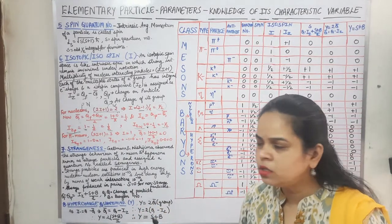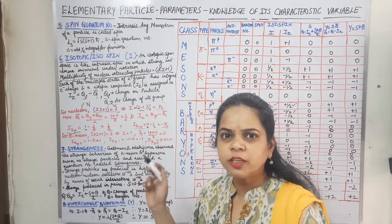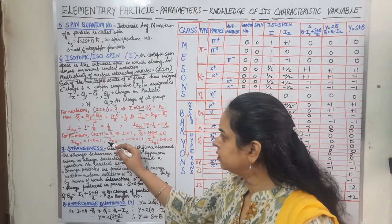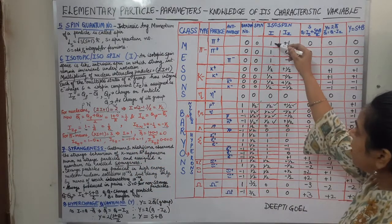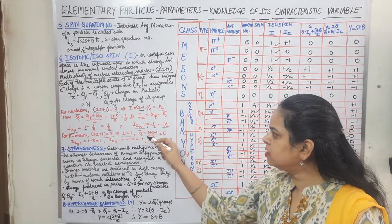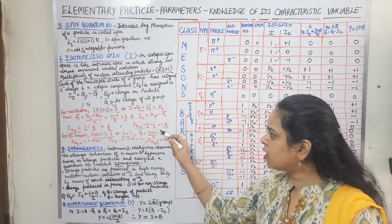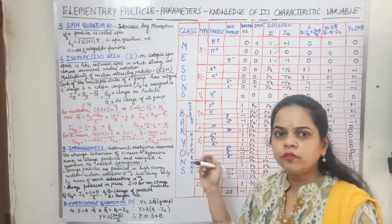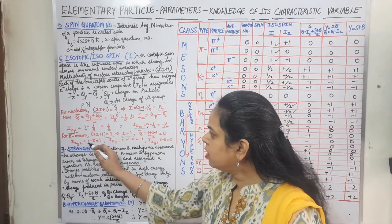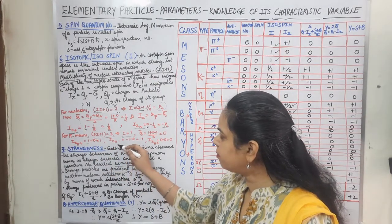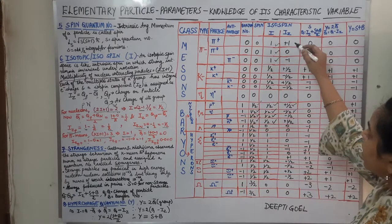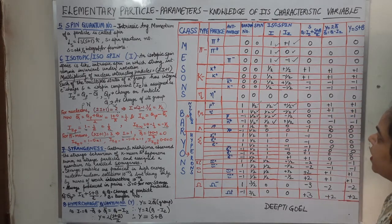Carrying the same calculations to mesons: the pi mesons have a multiplicity of 3 — pi positive, pi negative, and pi naught. So 2I+1 equals 3, giving I equals 1. The I value for pis is 1. The average charge Q-bar equals (1+0+(-1)) divided by 3 equals 0. Therefore Iz(pi positive) equals 1 minus 0 equals 1; Iz(pi negative) equals -1 minus 0 equals -1; and Iz(pi naught) equals 0 minus 0 equals 0.